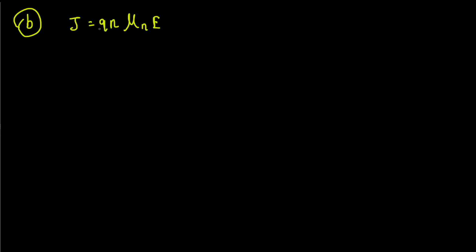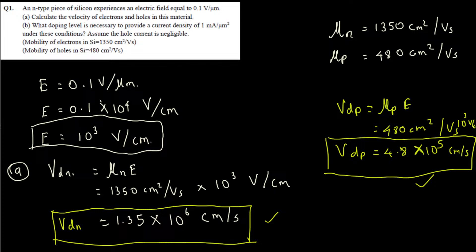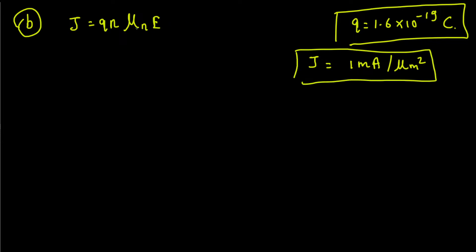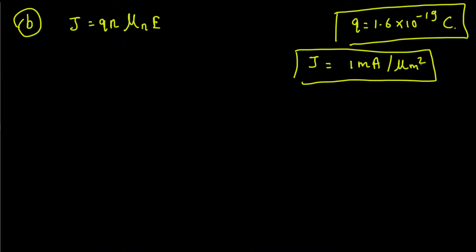Here q is the electron charge, equal to 1.6 × 10⁻¹⁹ coulombs. The current density J is provided as 1 milliampere per micrometer squared. Since our μn and E are both in centimeter units, we need to convert J into amperes per centimeter squared as well.